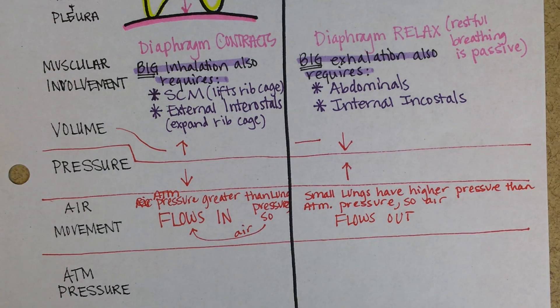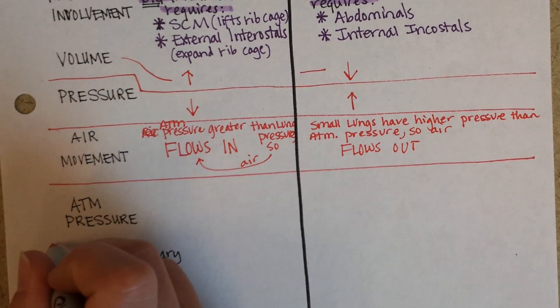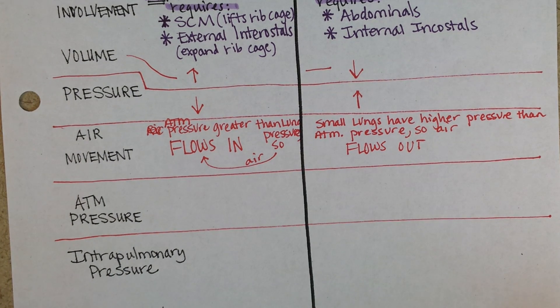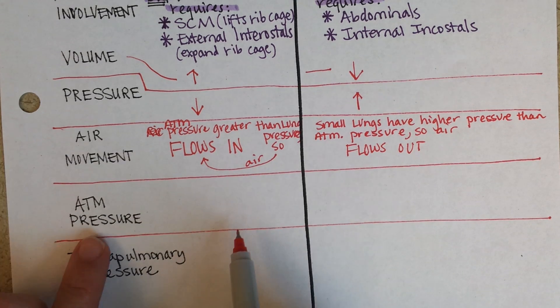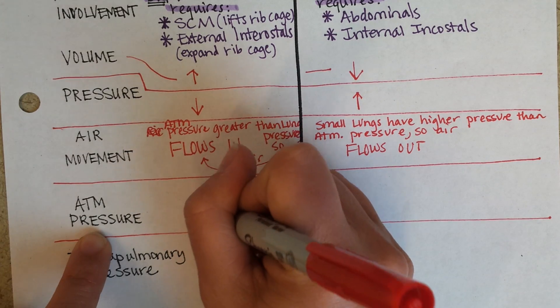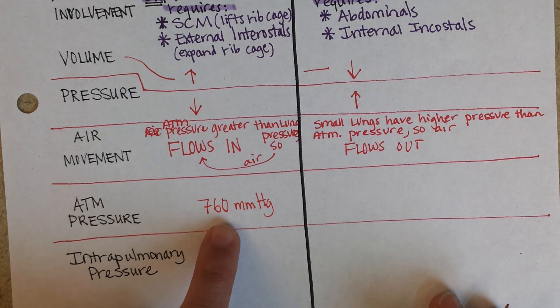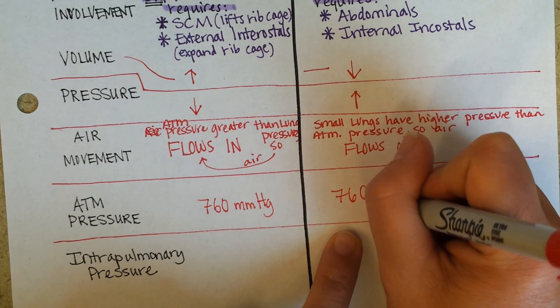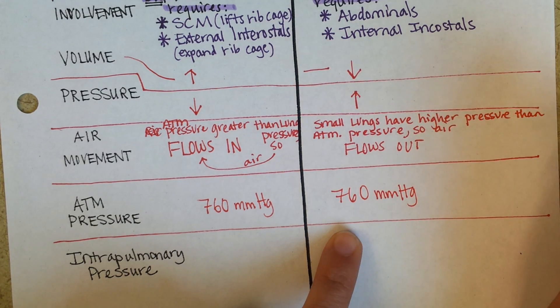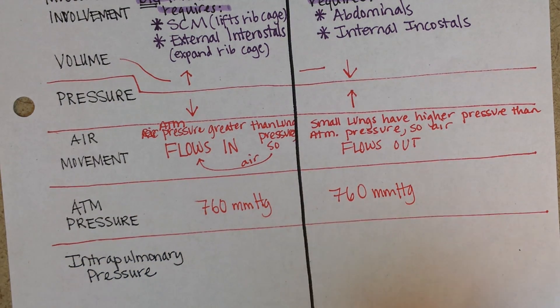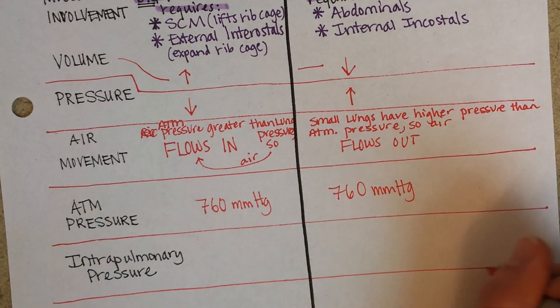Now the cool thing about this is that it doesn't have to be a big difference between atmospheric pressure and the pressure inside of your lungs. A difference of one millimeter of mercury would be enough, right? Air is going to flow down its pressure gradient. So let's look at what atmospheric pressure is. At sea level, it's about 760 millimeters of mercury when you're breathing in. And when you're breathing out, it's still 760 millimeters of mercury. Because you breathing in and out is not changing atmospheric pressure.